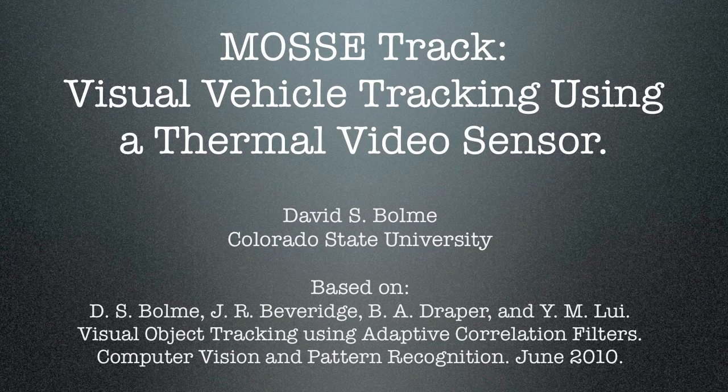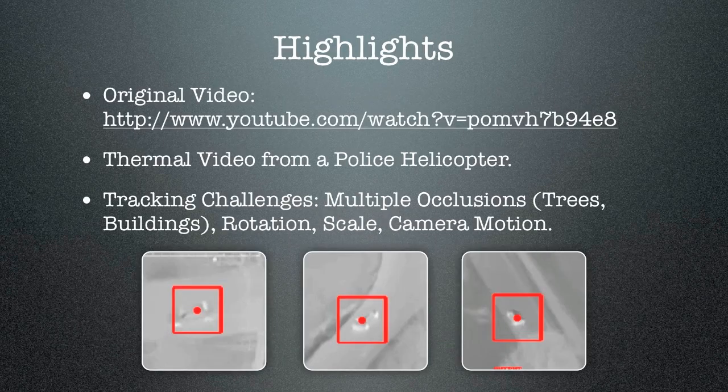In this particular video, we're going to be looking at a vehicle tracking scenario. The video comes from YouTube — it's a video from a police helicopter using a thermal camera. The helicopter's in a police chase, and this video has a number of tracking challenges.